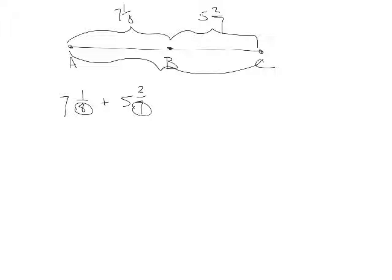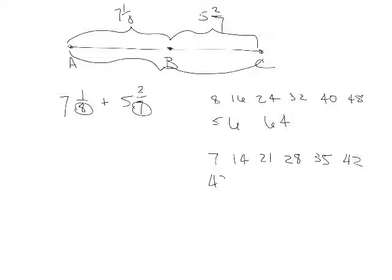And again, if we write our factors. So those are factors of 8. 7 would be 7, 14, 21, 28, 35. This is why it's good to know your multiplication tables. Oh, there it is right there.